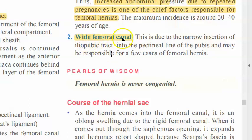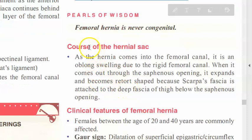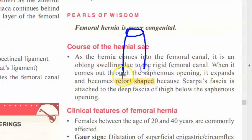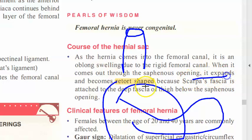In some cases the femoral canal itself becomes very wide. Importantly, femoral hernia is never congenital — it is always acquired. The ring and canal are quite narrow, but once the hernia comes out of the saphenous opening it can expand and become retort-shaped.